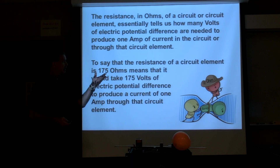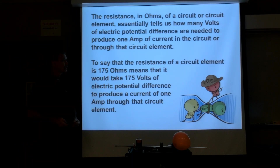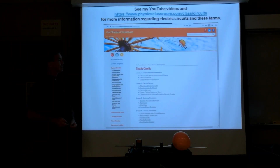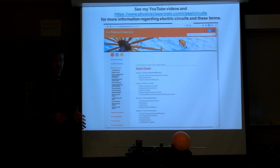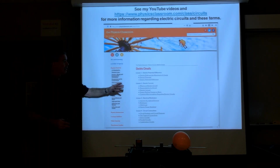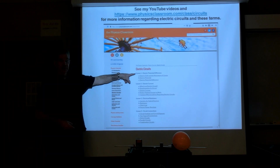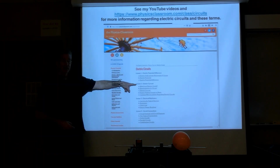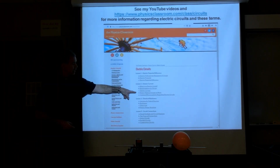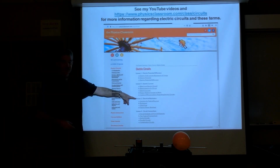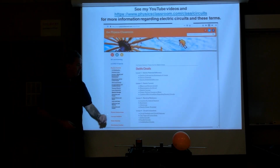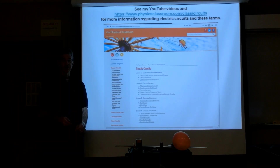Resistance is volts divided by amps — ohms is volts divided by amps. You can read more about these terms on electric circuits at physicsclassroom.com. Lesson one covers electric potential difference and voltage, lesson two covers current and amperage, lesson three covers resistance measured in ohms, and lesson four discusses different types of circuits.